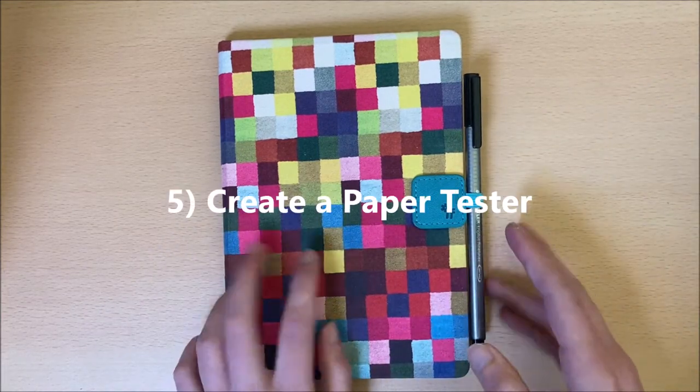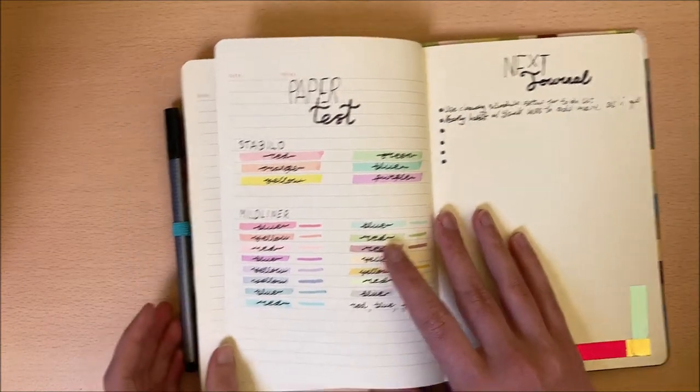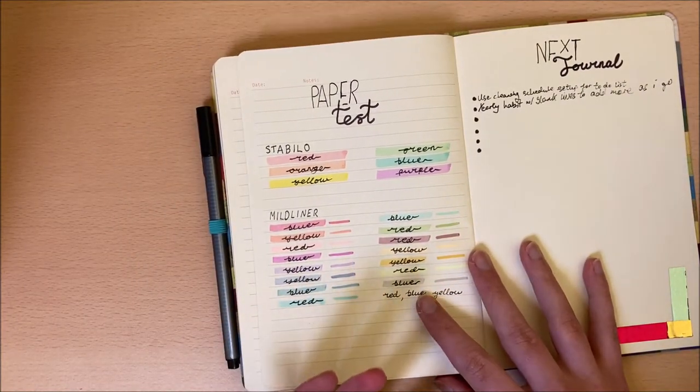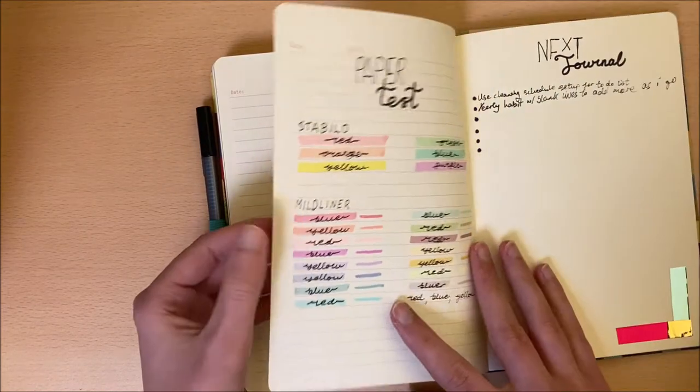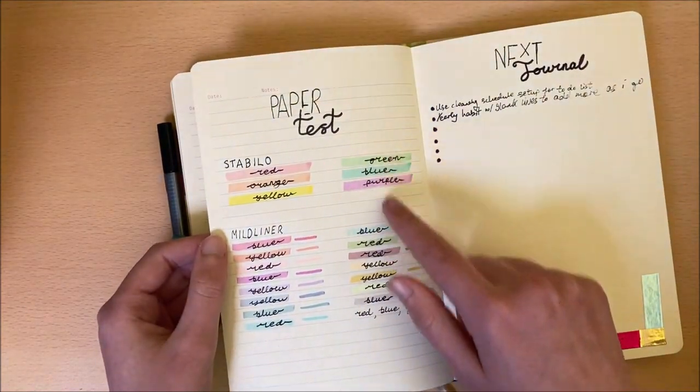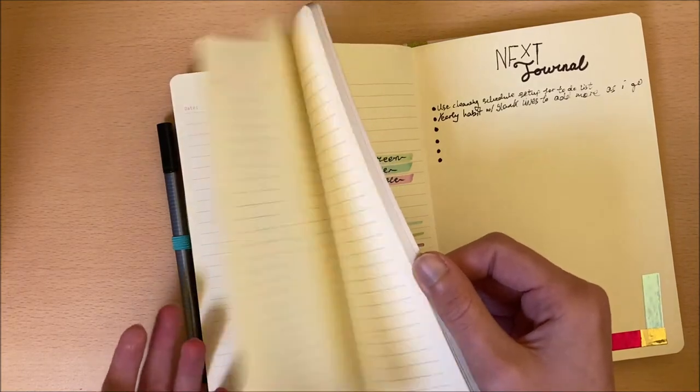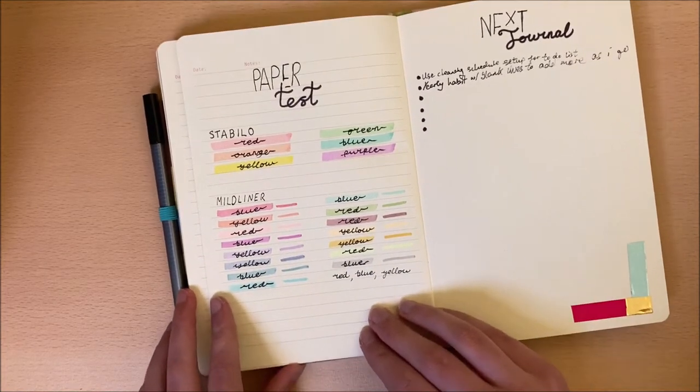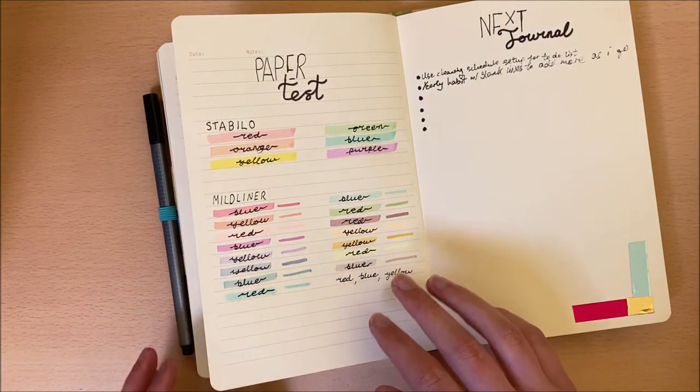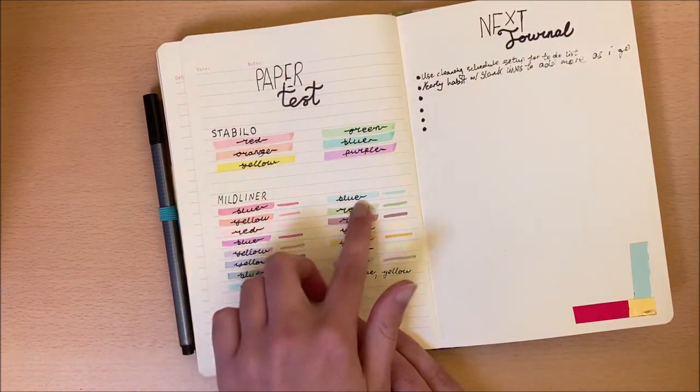So tip number five is to use your, not the very last page, but the last writing page, as a paper tester, or as a swatch test. This is very helpful for figuring out if you have any highlighters especially, but also for markers, for pens, they'll help you figure out if they do go through the page, or if you just want to figure out what they look like on the page. And for example, the pages on this bullet journal are not actually white, they're more of a cream color. So I wanted to make sure that my usual highlighters actually showed up correctly on the page. So this is really helpful to just get it all in one place, and then you're creating your different monthly themes, or your weekly spreads, or whatever page you want to create next, you can immediately tell what it's going to look like on that page.